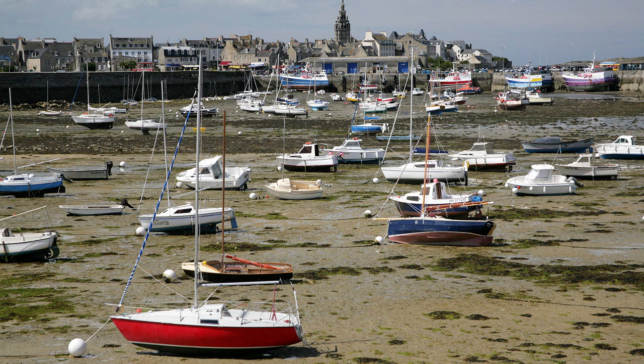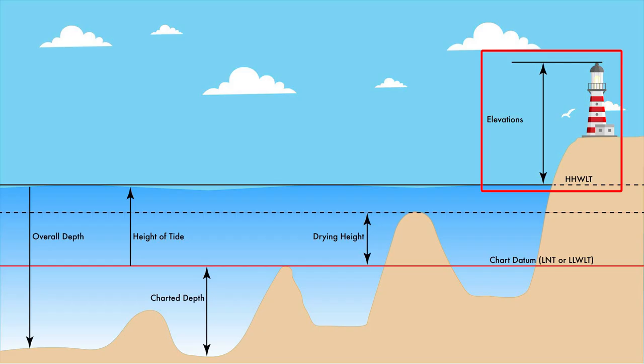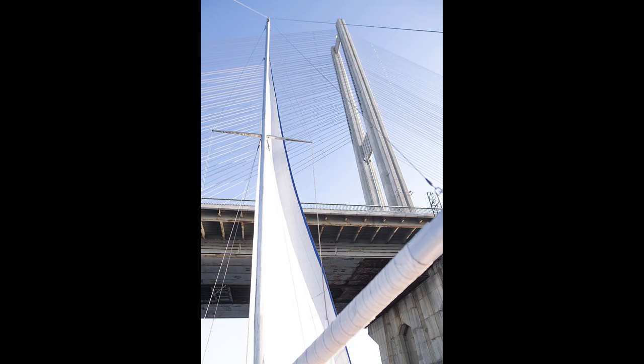Don't get caught up in all this terminology — just be sure to know what the datum is for your particular chart. Elevations and clearances, like bridges, in Canada are measured from higher high water large tide, HHWLT. But once again, different countries use different clearances, so be very sure of which datum is being used before transiting under a bridge or cable.